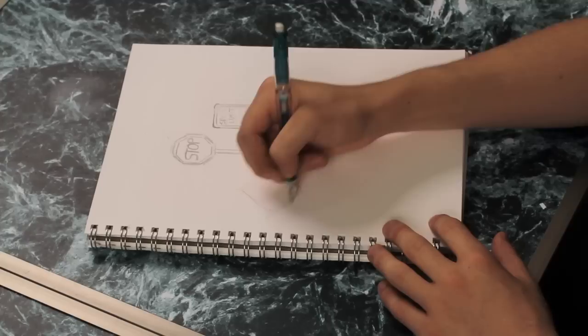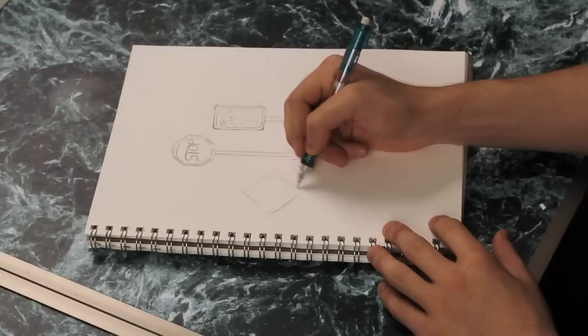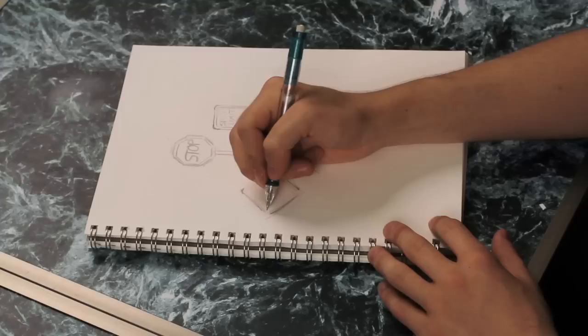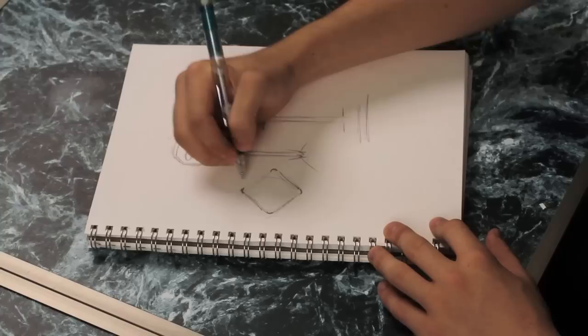So I'll just draw a nice square here, roughing out the shape, and then picking exactly where I want it to be. And again, these corners are softened or curved. So go ahead and put those points in.